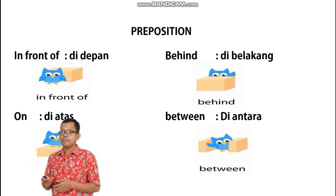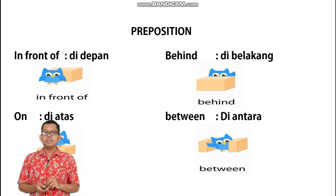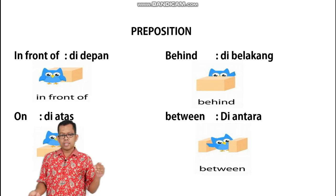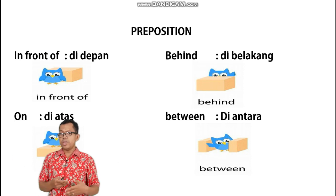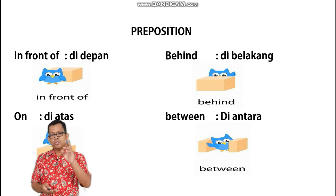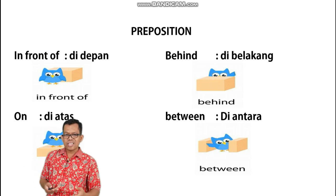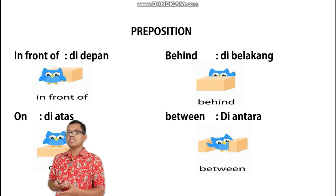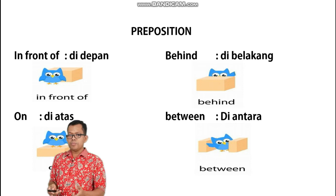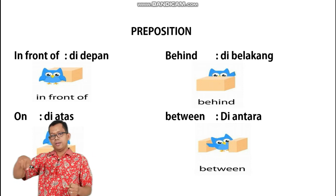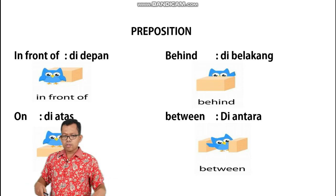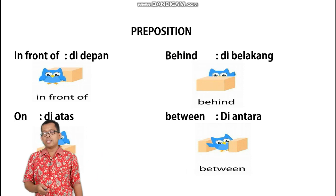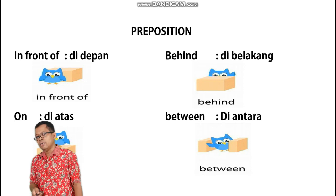Next, 'between'. Between di sini ada dua. Yang pertama, jikalau benda tersebut berada atau diapit oleh dua benda lainnya — itu 'between'. Yang kedua artinya di antara, yaitu 'among' dalam bahasa Inggris — posisi benda sebagai subjek itu berada di antara banyak benda, atau di sekitarnya ada banyak benda yang mengapit dia. Kalau di sini yang kita pelajari dulu adalah 'between' — di antara.